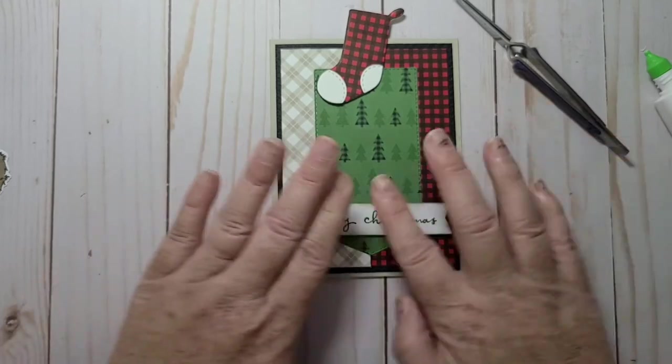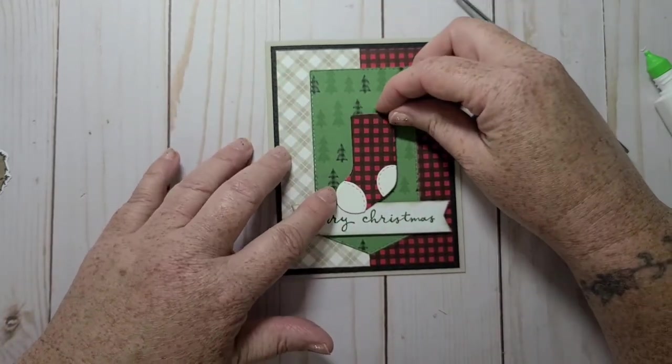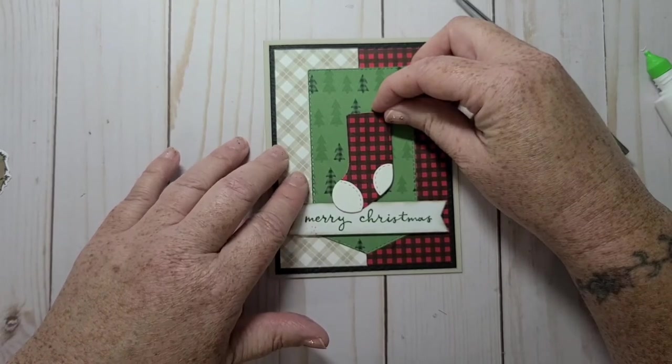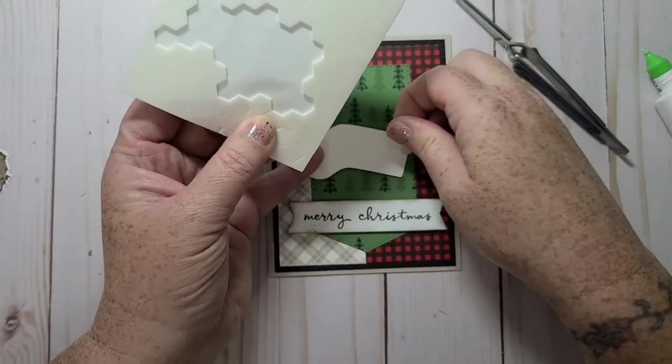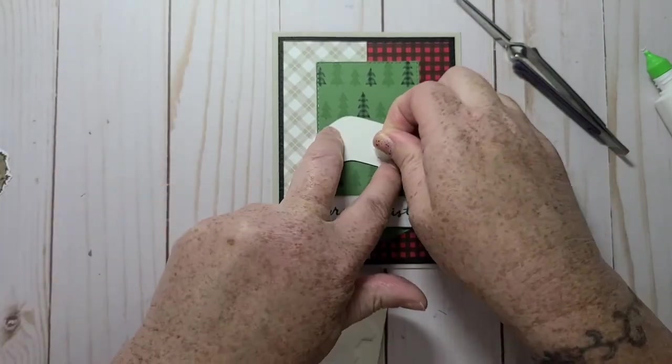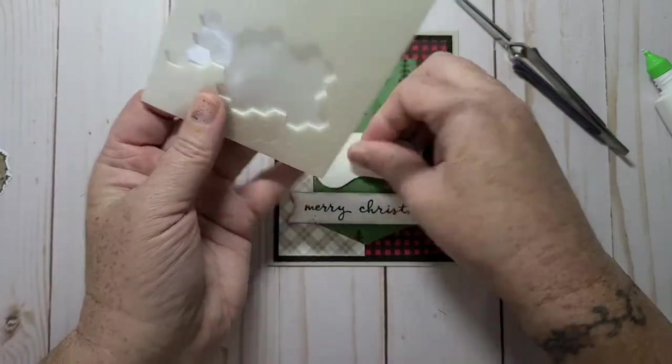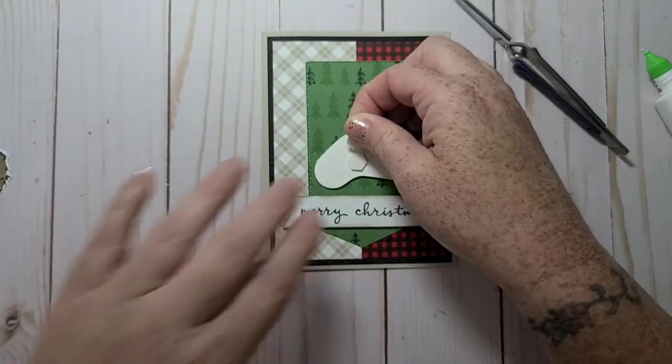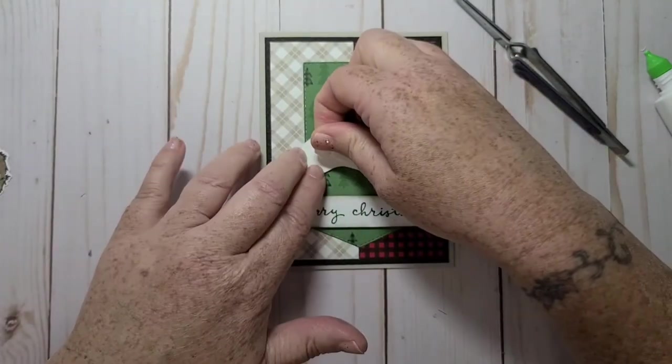That looks pretty straight. So I think I will put some dimensionals and leave no dimensionals on the bottom because that's going to overlap. Maybe I'll just do one more right here.